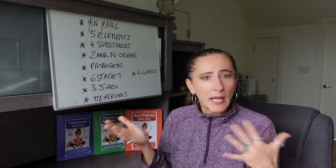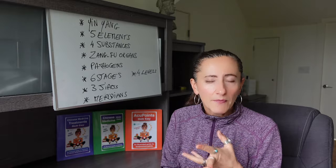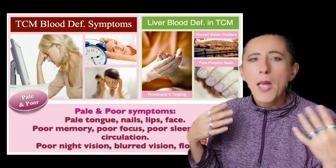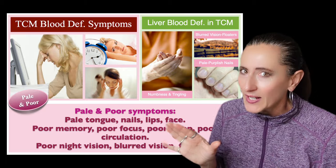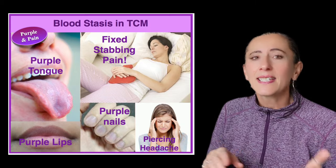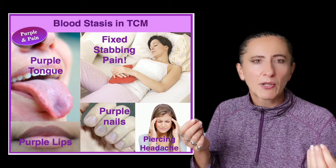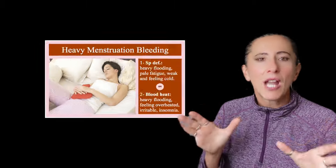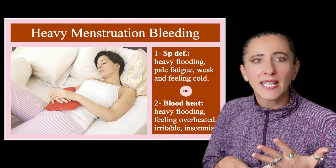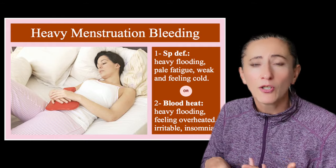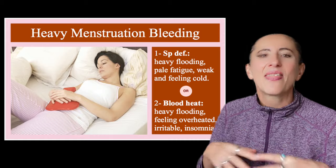Next is blood, which can be deficient, have heat, or be stagnated. Blood deficiency shows as pale face, pale lips, pale tongue, poor sleep, poor energy, poor memory, and poor vision. Blood stasis is pain and purple — purple tongue, purple nails, purple lips, and fixed local pain like dysmenorrhea, sciatica, or an acute ankle sprain. Blood heat means abnormal bleeding with heat signs: rectal bleeding, blood in the urine, heavy flooding menstruation, or nosebleeds, associated with feeling hot, a red tongue, rapid pulse, and irritability.